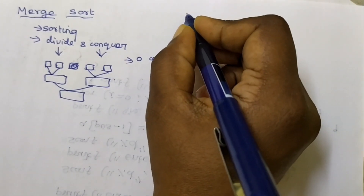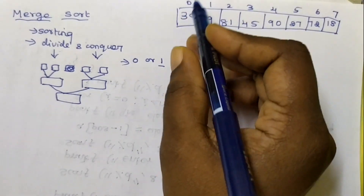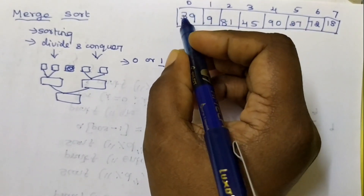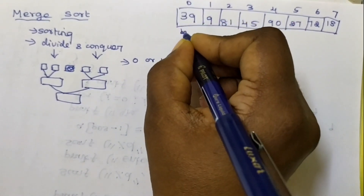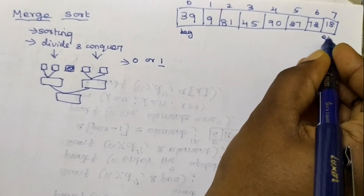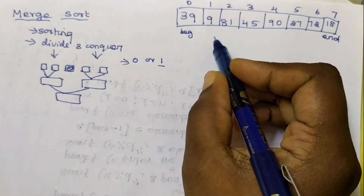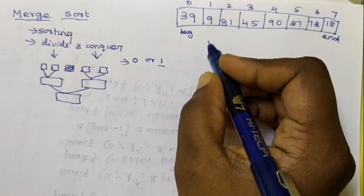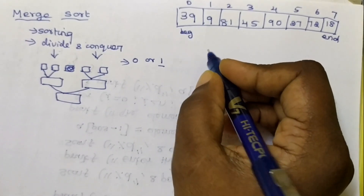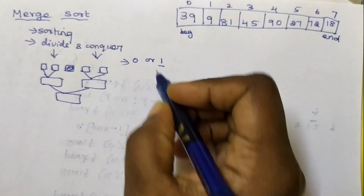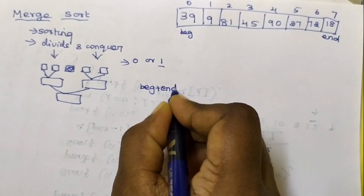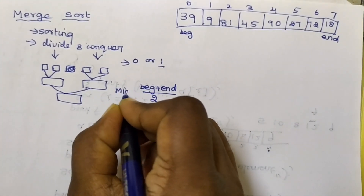We have a set of elements. In this array, index values go from 0 to 7. The 0th index is the beginning and the last index value is the end. The first array is divided into 2 using the formula: beginning plus end divided by 2, giving us the mid value.